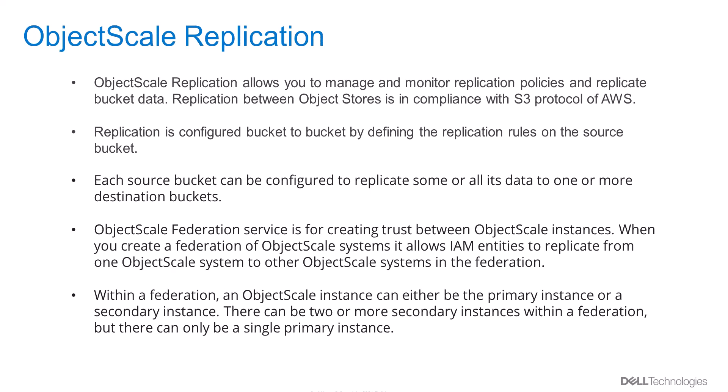The destination buckets can be in the same object scale system or in a different object scale system. Object scale also supports configuring a bidirectional replication or a unidirectional replication. In this demo, we are going to configure replication across two different object scale systems and also enable bidirectional replication.